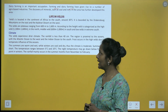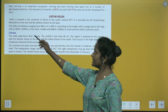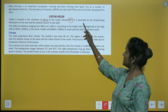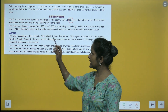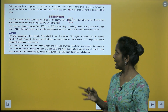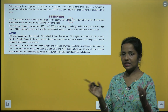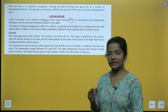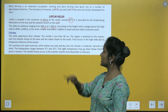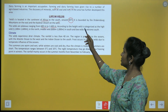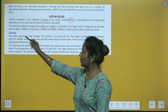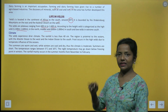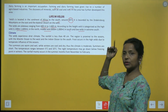Life in velds: velds is located in the continent of Africa to the south around 30 degree south. It is bounded by the Drakensberg Mountains on the east and the Kalahari Desert on the west. The velds are plateaus ranging from 600 meters to 1600 meters. Veld is categorized as high veld (1100–1600 meters) in the north, middle veld (600–1000 meters) in the south, and low velds in the extreme south.